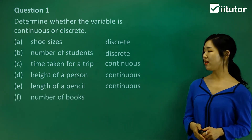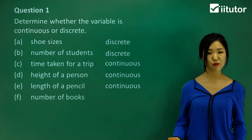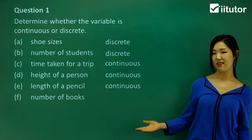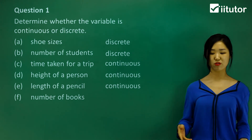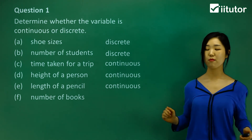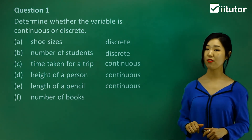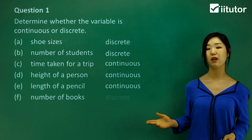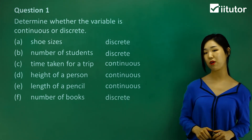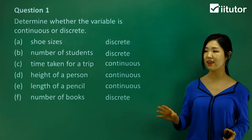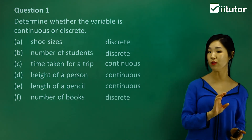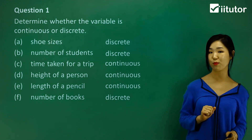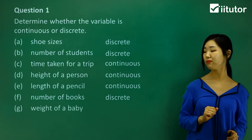The next one is the number of books. If I have books on a shelf I can easily count them — they're countable. That means they must be discrete. So anything that's easily countable is a discrete random variable.